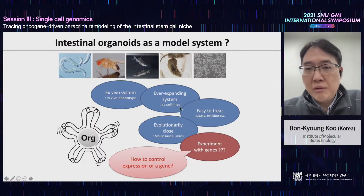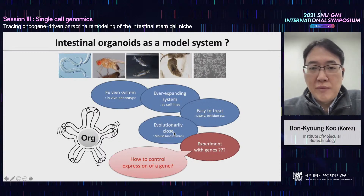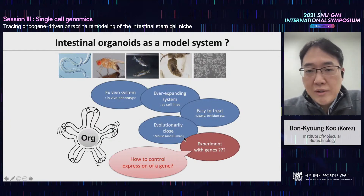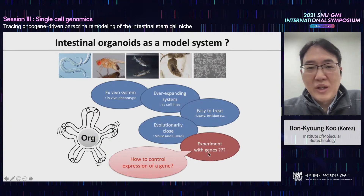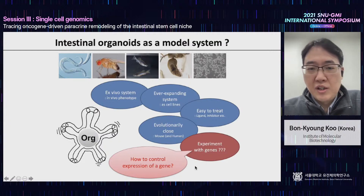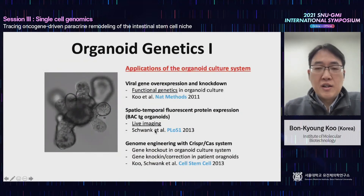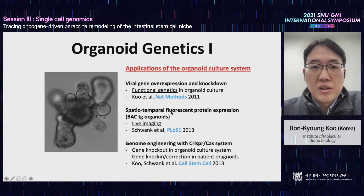They work like a cell line because they grow well in vitro. You can treat ligands and inhibitors, they are evolutionarily very close if you work with mouse organoids, and you can also work with human organoids to perform human experiments. However, about 12-13 years ago when I started working with organoids, there was no means to control gene expression in them, and that was the main question I had as a geneticist.